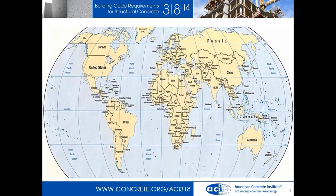318 is recognized around the world. ACI 318-14, which is our flagship document — our code for reinforced concrete — is now the basis for around 20 different countries for their reinforced concrete codes, and is used additionally in many other countries as a comparison to the codes that they use.